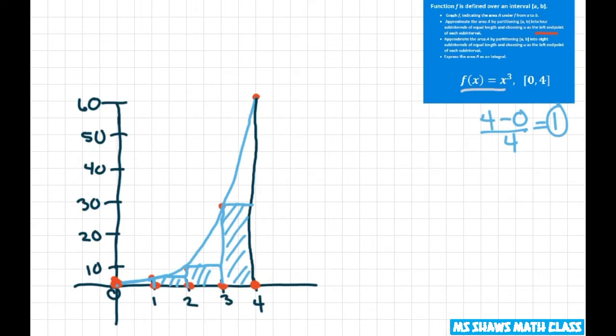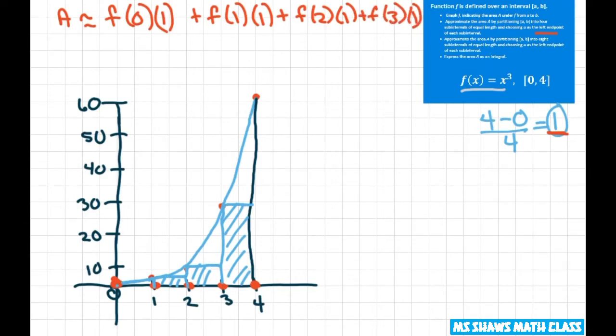The way you do this, you're going to approximate the area by taking f of 0 because that's where we're starting times your intervals there. So that's going to be 1. So we have 4. And then we do f of 1 times 1 plus f of 2 times 1 plus f of 3 times 1. That's our four subintervals.